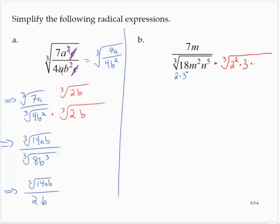I would have to multiply the m to the second by an m, because that would give me an m to the third. And I'd have to multiply the n to the fifth by an n, as that would give me an n to the sixth. And I'll multiply the numerator by the same quantity.